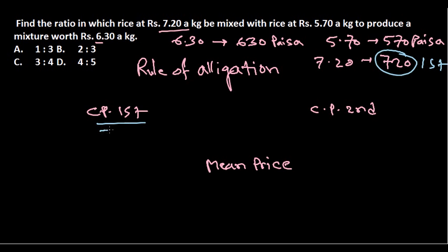The cost price is 720 for the first type, we put the value 720 here. The cost price of the second type is 570, so for the second type we put the value 570 there. And the mean price here is 630.